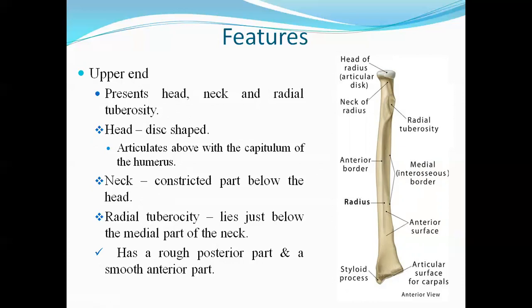The radial notch of the ulna forms the superior radioulnar joint. Below the head is the constricted area called the neck of the radius. The radial tuberosity has a rough part lying posteriorly and a smooth part lying anteriorly.